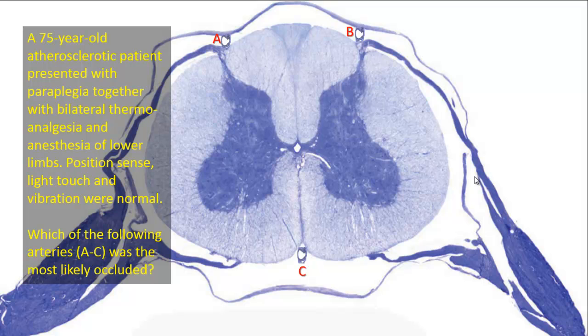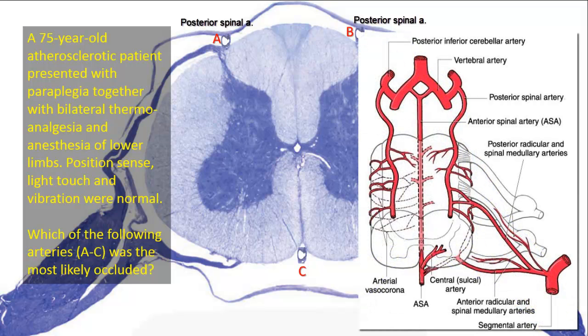The arteries shown are: posterior spinal arteries A and B, each a branch of the posterior inferior cerebellar artery; and C, the anterior spinal artery, formed by contributions from each vertebral artery. The spinal arteries, whether posterior or anterior, extend the length of the cord, but they are small vessels, and most of their blood comes from reinforcements by anterior and posterior radicular arteries.